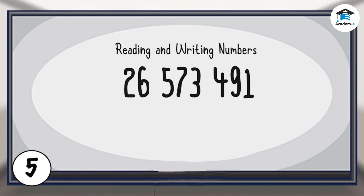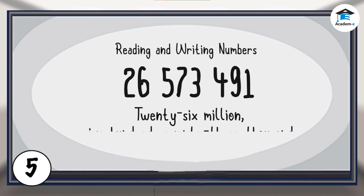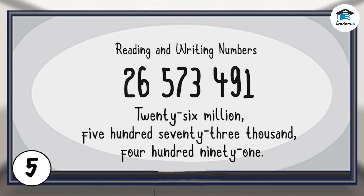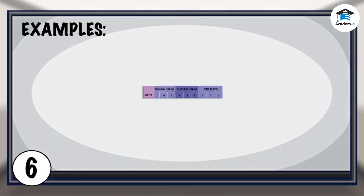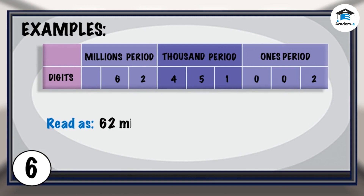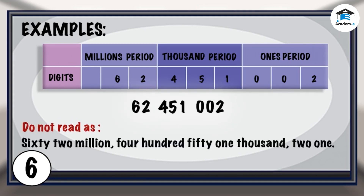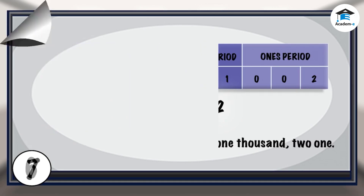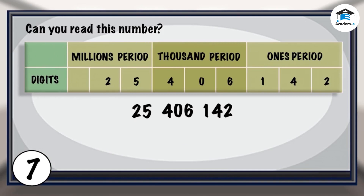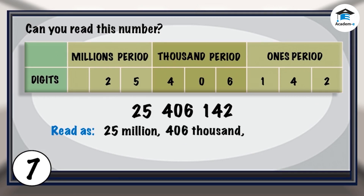This number is therefore written and read as 26,573,491. Read as 62,451,002. Can you read this number? 25,406,142.